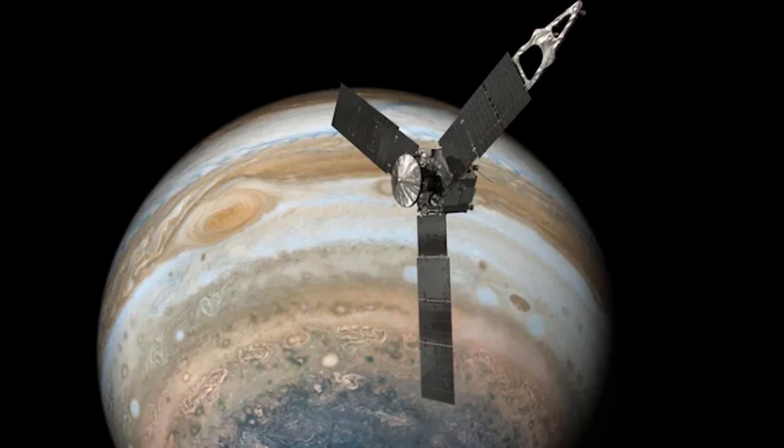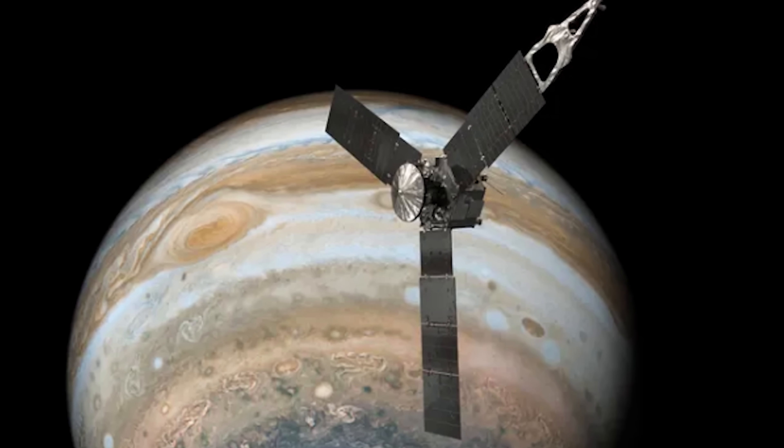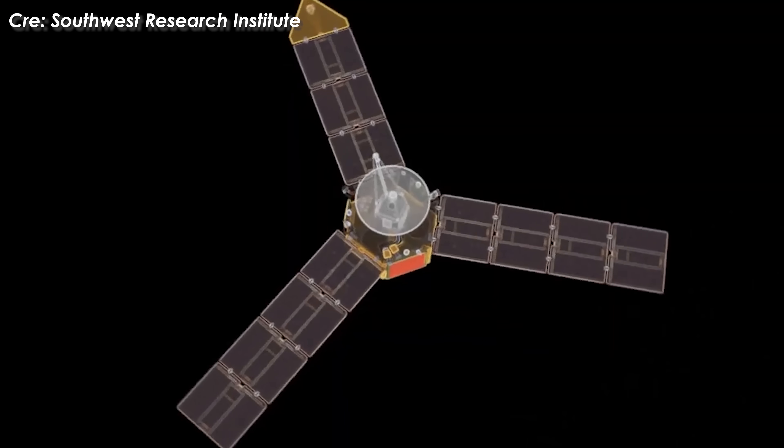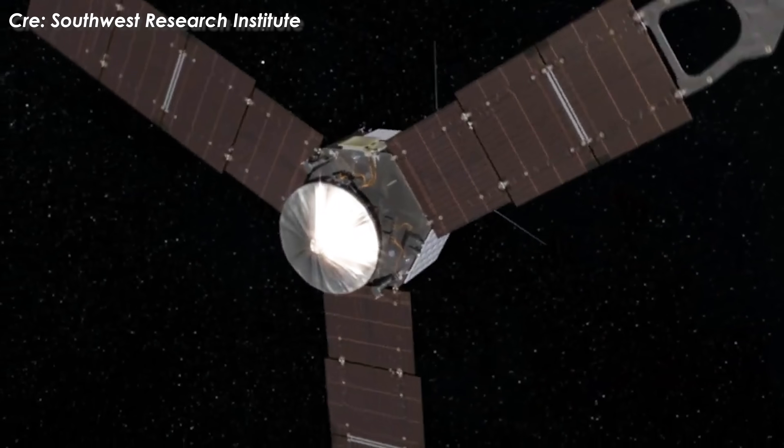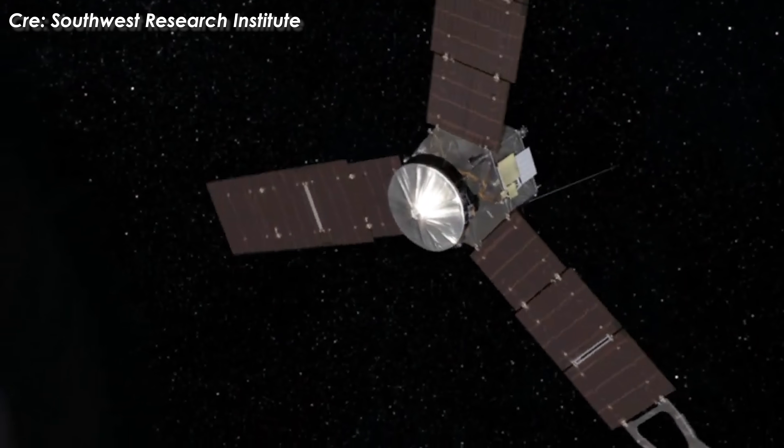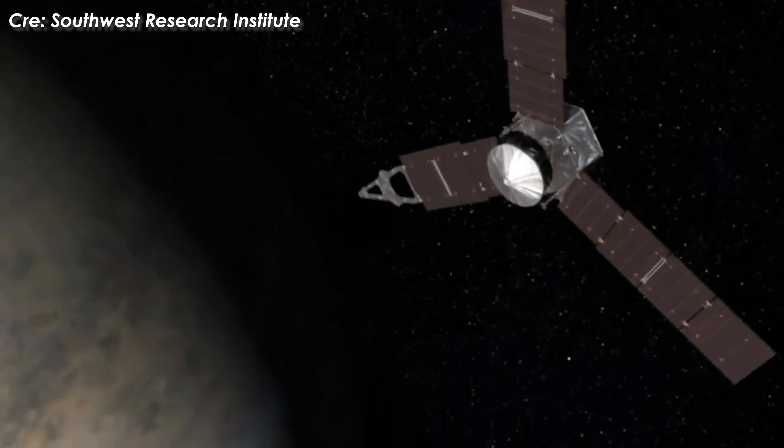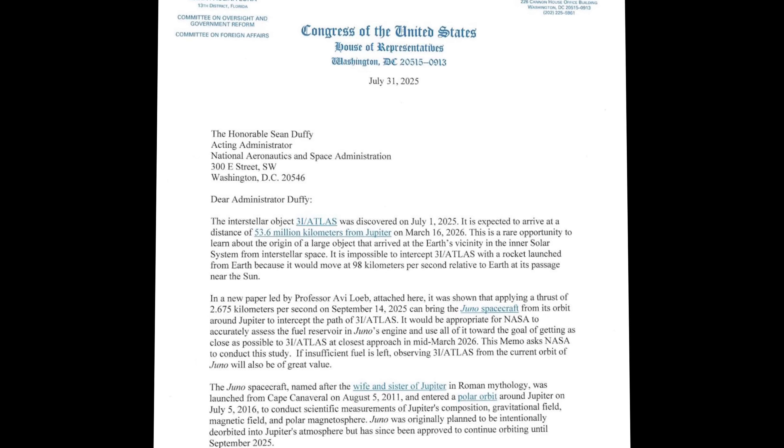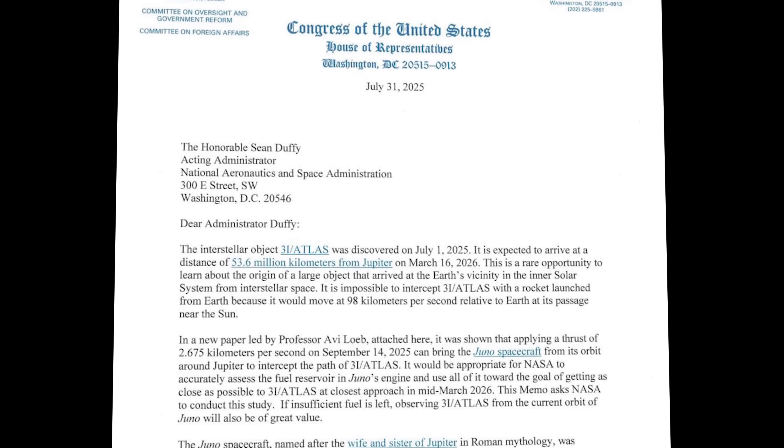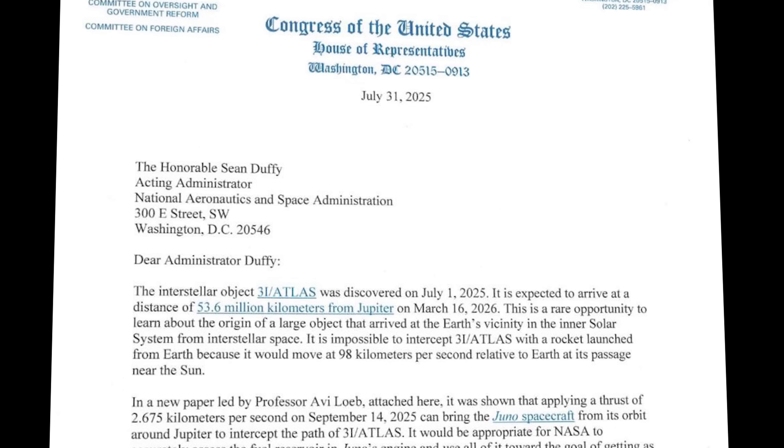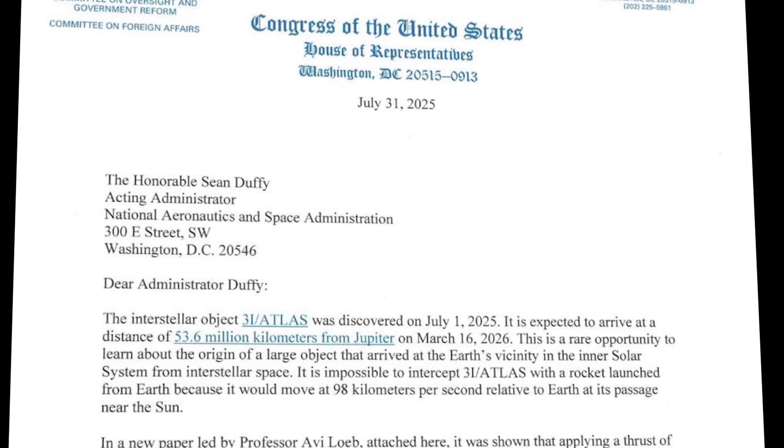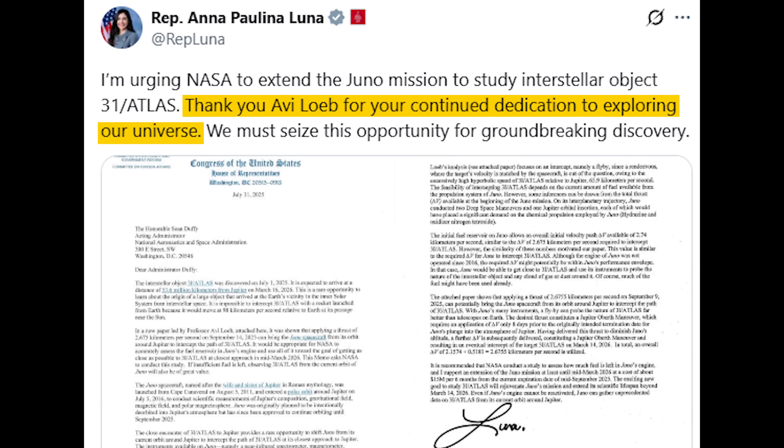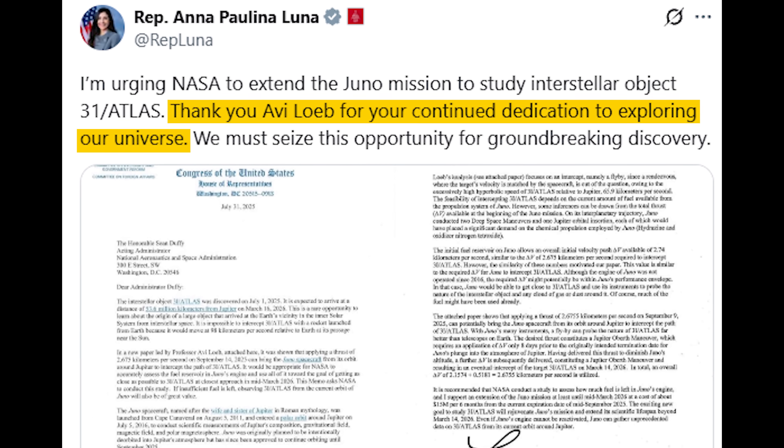He revealed that Congresswoman Anna Paulina Luna had reached out to him regarding matters related to 3I Atlas and his proposal to use Juno to investigate the object, rather than let its mission end by crashing into Jupiter. Luna later posted a letter she had sent to acting administrator Sean Duffy on her ex-Twitter account, attaching a note of gratitude to Avi Loeb.